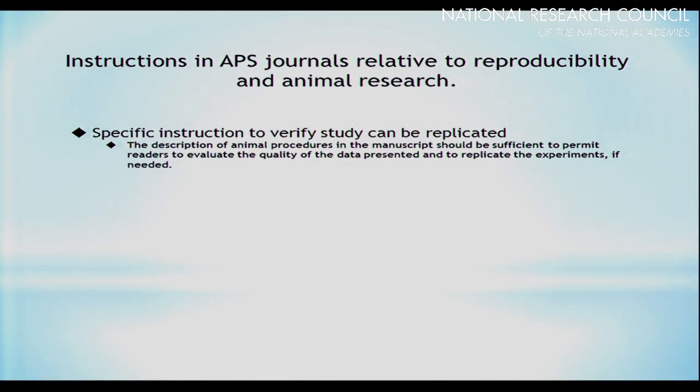We have specific instruction to verify that the study can be replicated. The verbiage states: 'The description of animal procedures in the manuscript should be sufficient to permit readers to evaluate the quality of the data presented and to replicate the experiments if necessary.' So it's specifically stated there. We also have specific instruction that includes doses of anesthetics and analgesics, and that infers also the routes by which they are administered. We don't have specific instruction on test items as to how that should be presented.